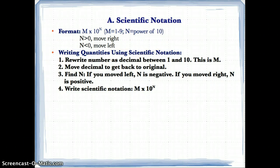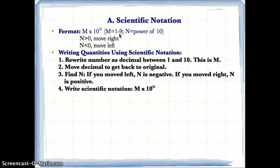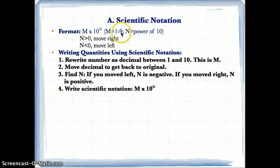Examples of valid answers would be like 1.3 times 10 to the n. However, 0.3 times 10 to the third would be wrong because 0.3 is not between 1 and 9. The number in front always has to be between 1 and 9 — for example, 2.3 times 10 to the first or 3.6 times 10 to the second. Similarly, 0.9 times 10 to the third is not allowed, and 10 times 10 to the first is wrong because 10 is not between 1 and 9.